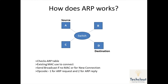In the ARP packet frame, you will see an OP code, which means operation code. The operation code denotes whether it is an ARP request message or an ARP reply message. Operation code 1 is used for ARP request and number 2 is used for ARP reply.